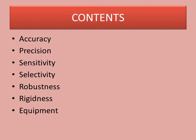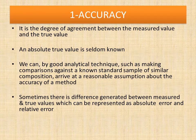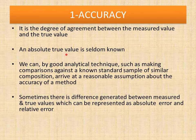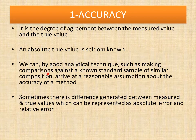The first factor is accuracy. It is the degree of agreement between the measured value and the true value — meaning how close our result is to our expected value. This absolute true value is seldom known, but sometimes we know what our result should be. By good analytical technique, such as making comparisons against a known standard sample of similar composition, we can arrive at a reasonable assumption about the accuracy of a method.